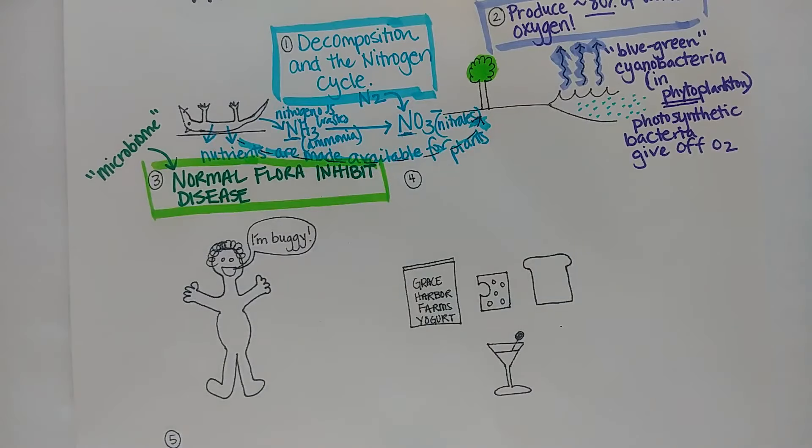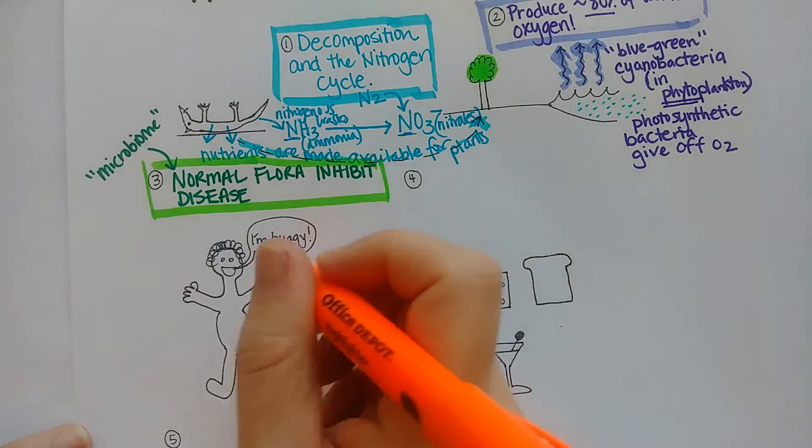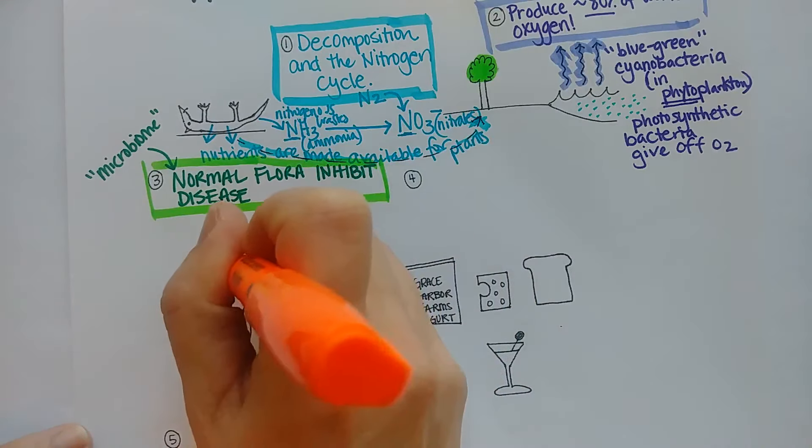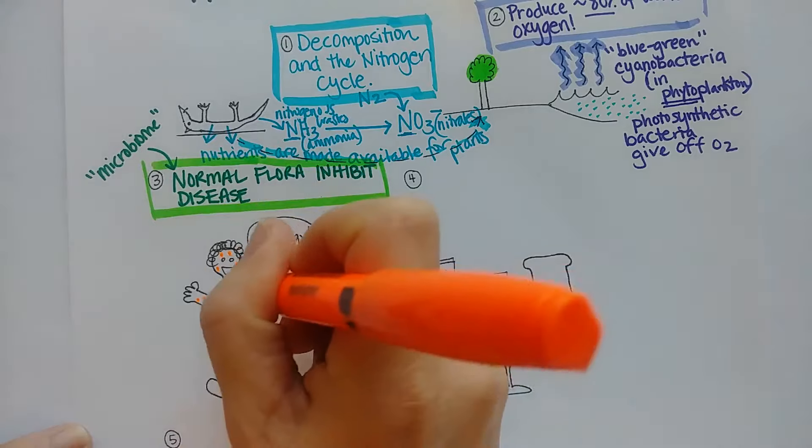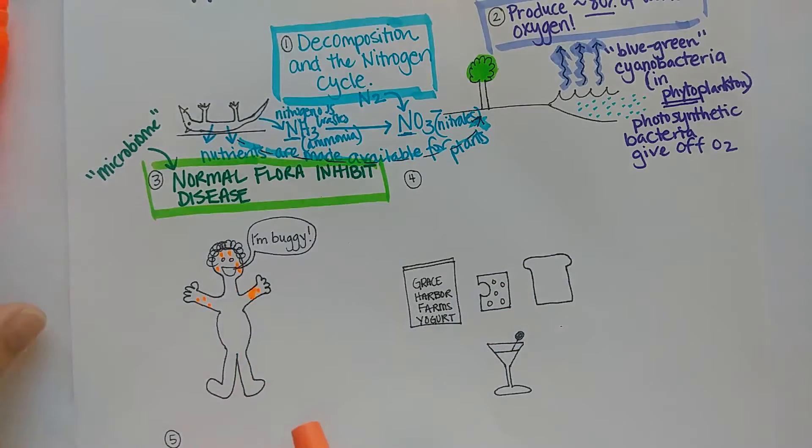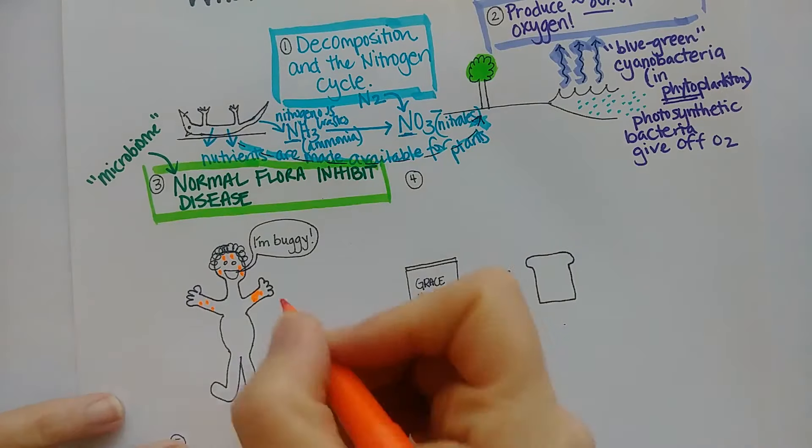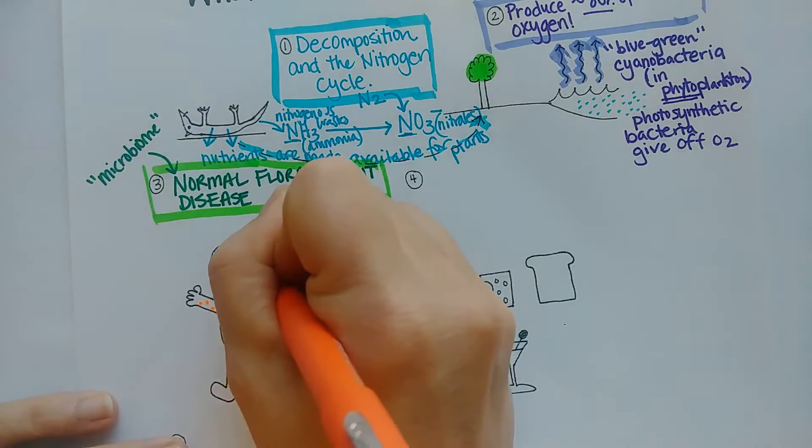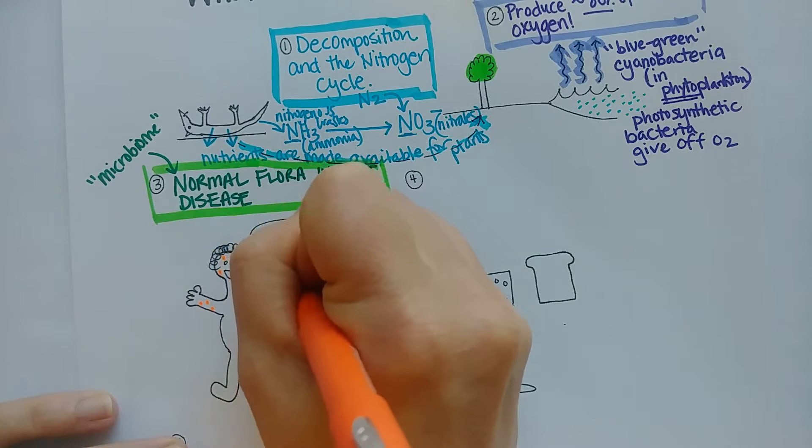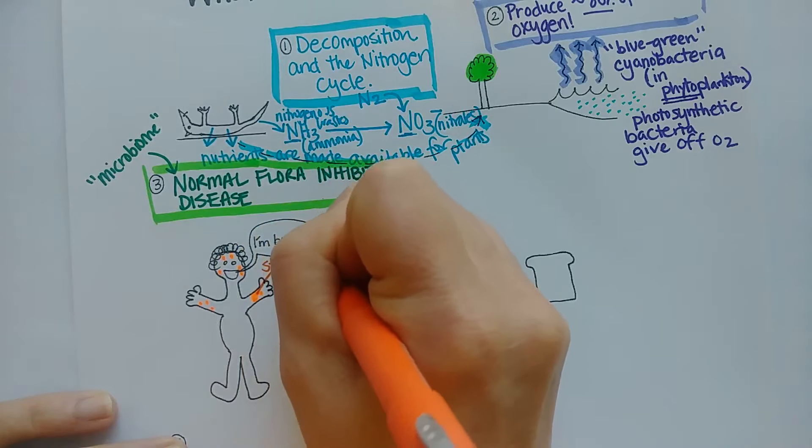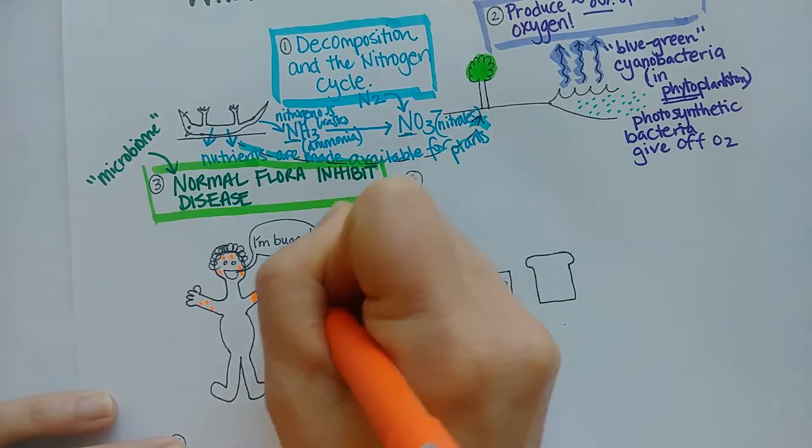Let's use orange for some microorganisms that live on your skin. So on your skin, all around—it's like I'm giving them chicken pox—you're very commonly covered with Staphylococcus epidermidis, maybe in the nose too.